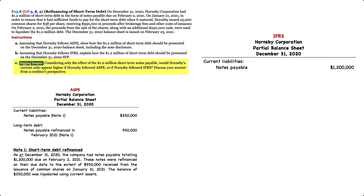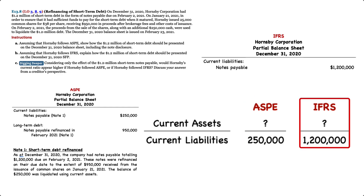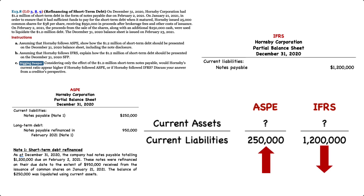For requirement C, considering only the effect of the $1.2 million short-term notes payable, would the company's current ratio appear higher if it followed ASPE or IFRS? We know the current ratio is calculated as current assets divided by current liabilities. So if the company follows ASPE, the current liabilities in the denominator would include only $250,000 related to short-term notes payable. If the company followed IFRS, the current liabilities would include a much higher $1.2 million. As a result, with a smaller number in the denominator, the current ratio would be higher if the company followed ASPE.